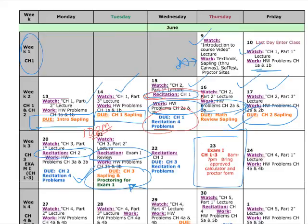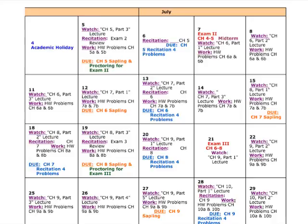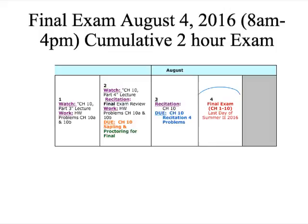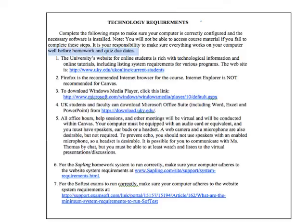I've put this schedule together for you — announcements will come telling you what to watch, what to work, and what to do. I also wrote out a format for July — what to watch, what's due, with recitation included. If you put about 3 or 4 hours a day and do this every single day, you should be successful. The last slide shows August, with the final exam on August 4th. These are the technology requirements in your syllabus — figure these out before your homework, meaning today, because three homework assignments are due next week. Firefox is the recommended internet browser.